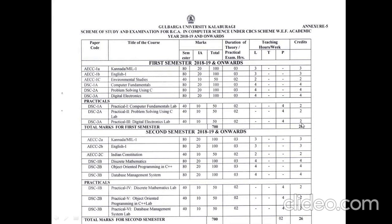In the second semester, you will again have a language paper — Kannada or Hindi — along with English. The third paper is Indian Constitution for 50 marks: 40 external and 10 internal. Both language papers are 100 marks each: 80 external and 20 internal. The computer-related paper DSC1B is Discrete Mathematics for 100 marks: 80 external and 20 internal.